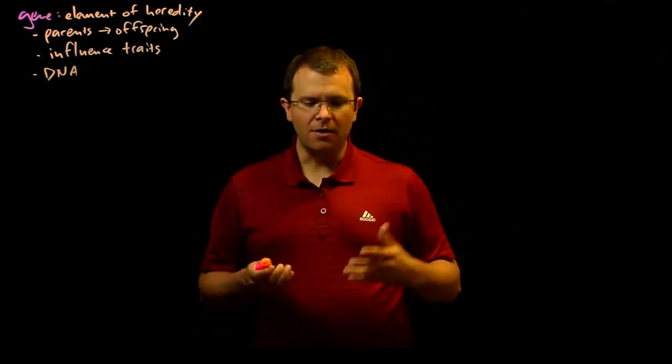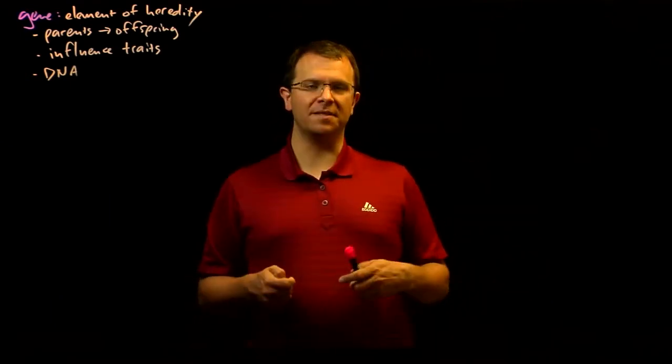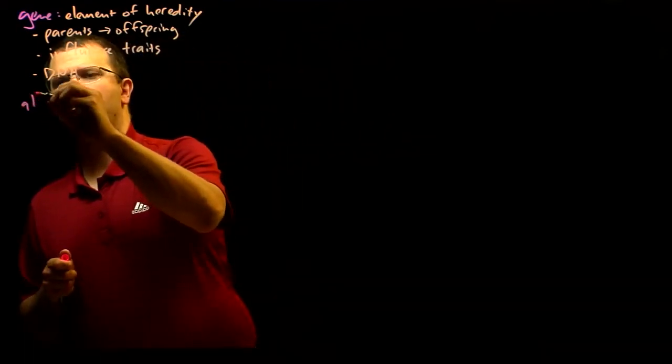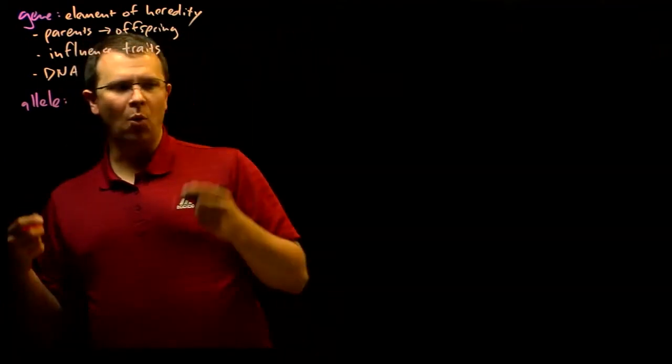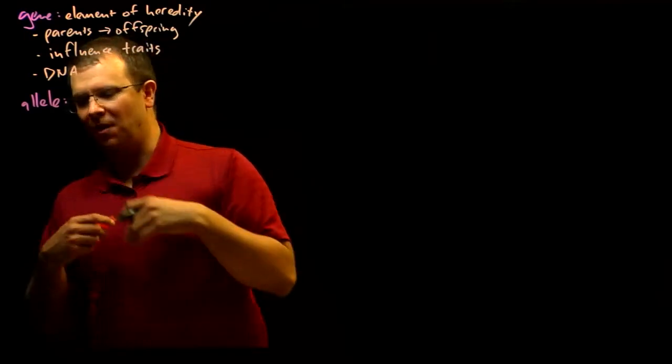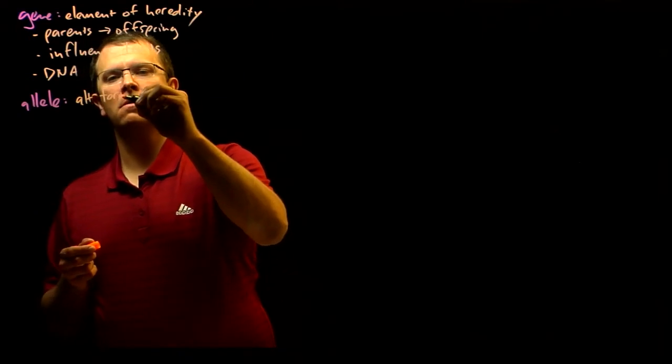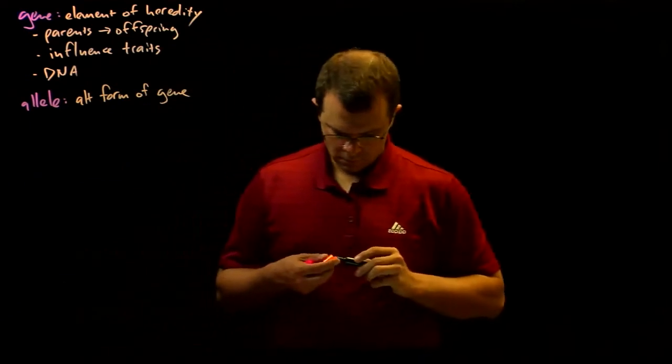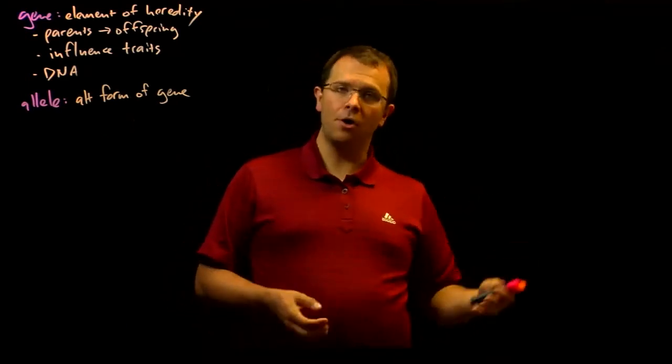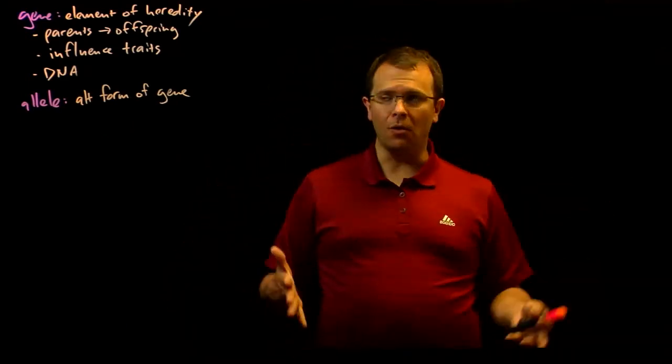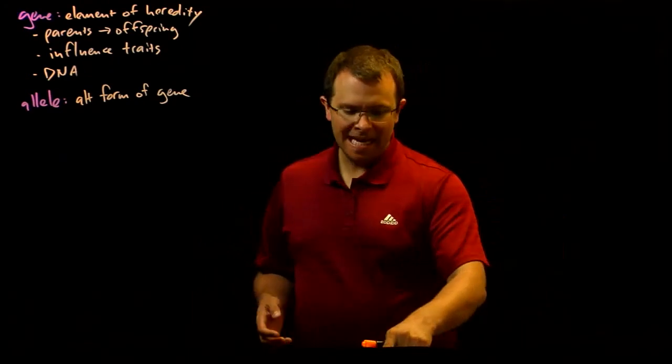We also know that not all copies of a gene have the same DNA sequence. We call alternative forms of genes alleles. So an allele is one particular form or one particular alternative form of a gene. And if it's a protein coding gene, then different alleles might code for different amino acid sequences. Or if the difference is a silent mutation, they may have exactly the same amino acid sequence.